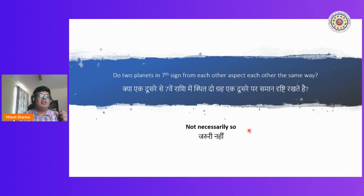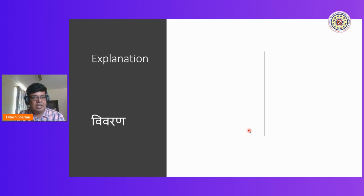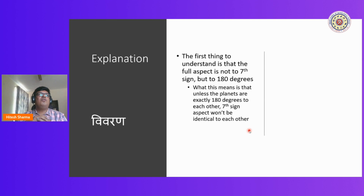It is not necessary that the aspect of two planets in the 7th sign from each other will be equal. Let me explain this. To explain this, we again look at Shadbala — specifically what we call aspectual strength or Drishti Bala.